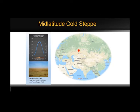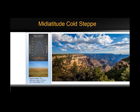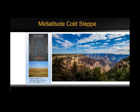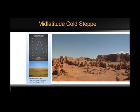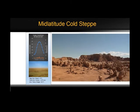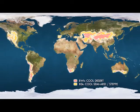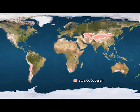The next subtype is the mid-latitude cold steppe. This climate shares many of the same characteristics as the tropical steppe — both are semi-arid climates affected by interior continental or leeward orographic positions. However, the mid-latitude steppe experiences larger temperature ranges and receives more total rainfall than the tropical steppe. Another interesting characteristic: the mid-latitude cold steppe, very similar to the tropical steppe, surrounds the most arid zone, acting as a transition buffer between extreme dry and less dry conditions.